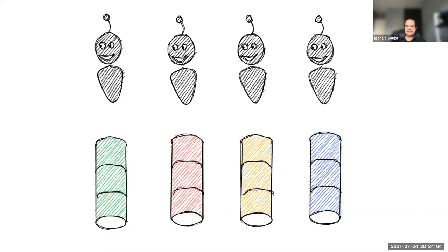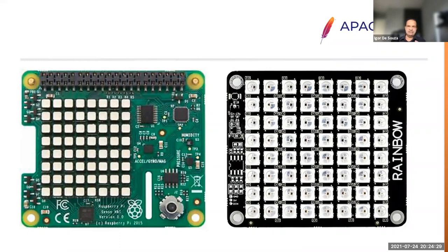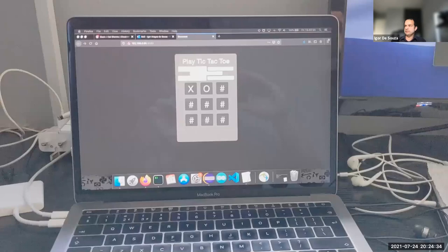Other kinds of HATs on the market: on the left side we have the Sense HAT and on the right side is the Rainbow HAT. The Sense HAT has a lot of sensors but also has an 8x8 LED matrix. I can use this for teaching as well — turn the lights on and off, it's the same idea. On the right side I have the Rainbow HAT. The picture here shows an 8x8 version, but there is a version with 16x16 and 32x32 as well. I can create things like that, for example.